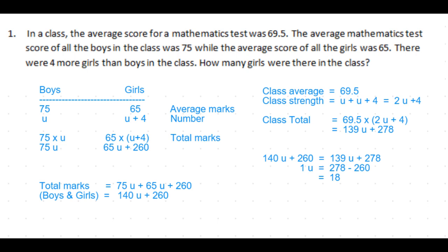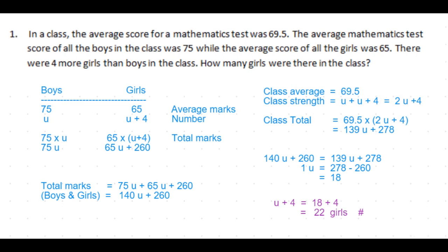One unit is equal to 278 minus 260, which is 18. But we know that one u is nothing but the number of boys in the class, and the number of girls is u plus 4. So the number of girls in the class is 18 plus 4, which is 22 girls. That's the answer for this question.